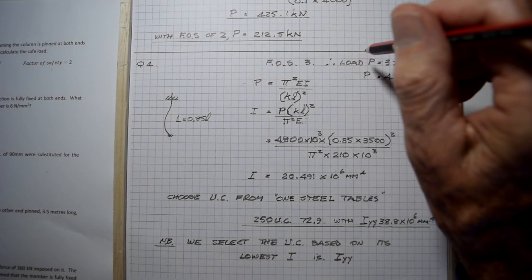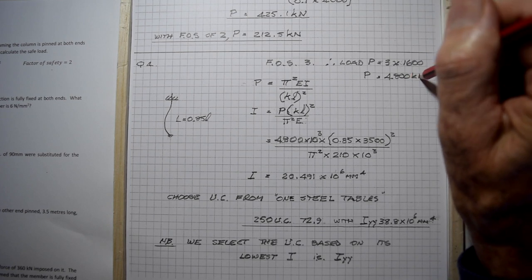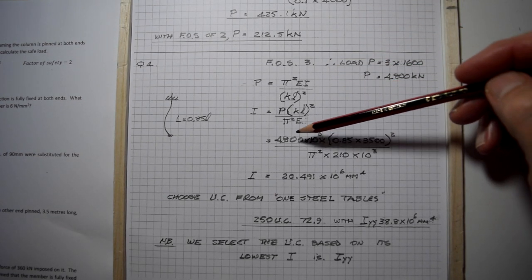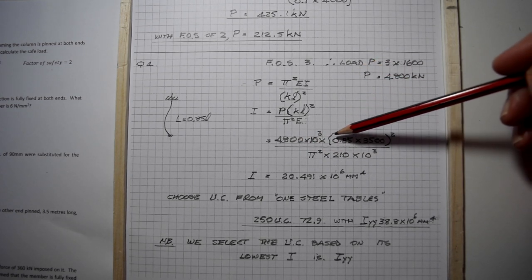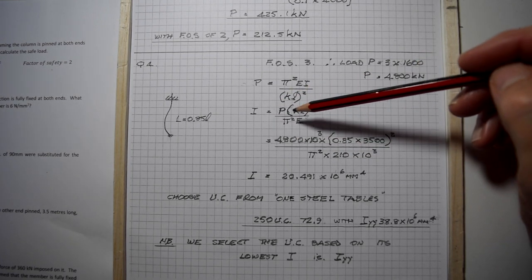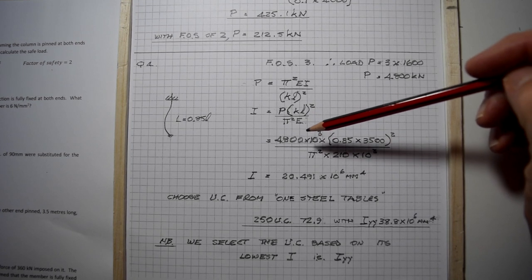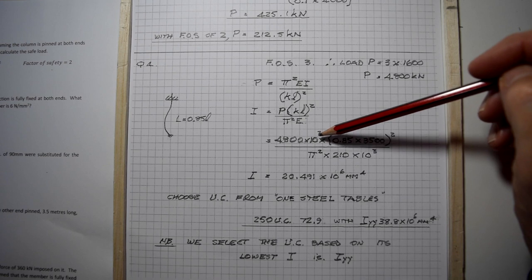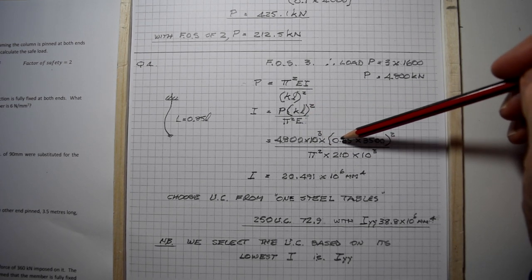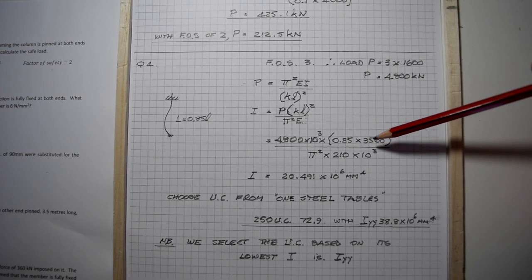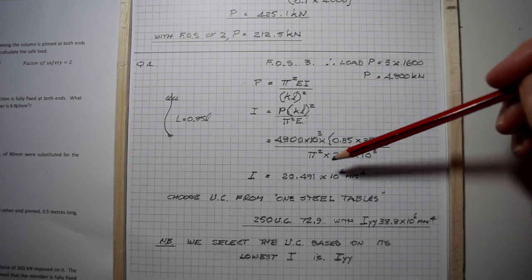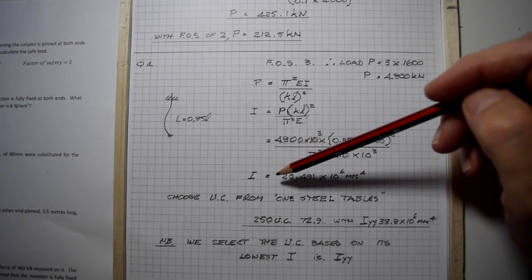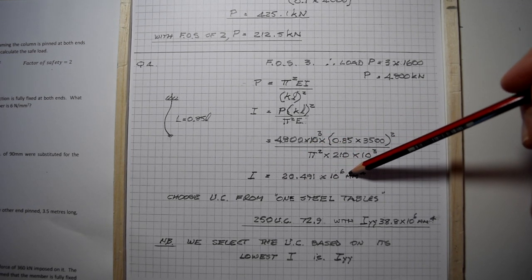We elevate the load by multiplying by three, giving 4800 kilonewtons. Putting that into Euler's formula, we've transposed to make I the subject. We have 4800 times 10 cubed for P, kale squared is 0.85 times 3.5 meters squared. The required moment of inertia is 20.491 times 10 to the 6 millimeters to the fourth.